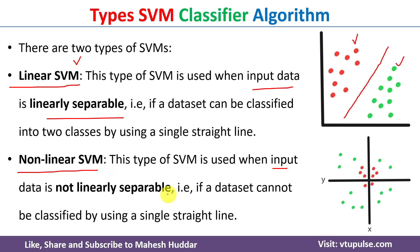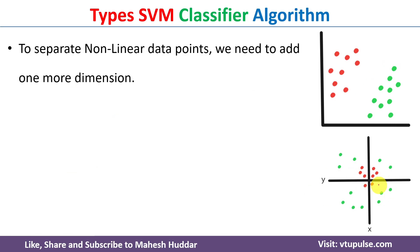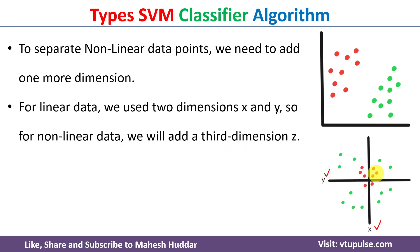The second type is known as non-linear SVM — whenever the input data is not linearly separable. If you look at this dataset, it again has two classes — red circles and green circles — but in this case we cannot draw a straight line to classify the data into two classes; that is not possible. So this is called non-linear SVM. To solve this kind of problem, whenever such non-linearly separable data is given, we need to increase the dimension. Right now we have two-dimensional data — x and y — and we need to add one more dimension, z, so that we can convert the non-linearly separable data into linearly separable data.